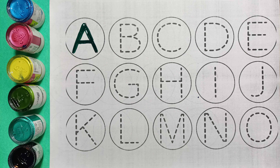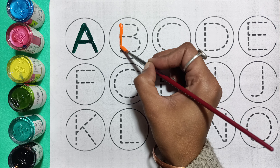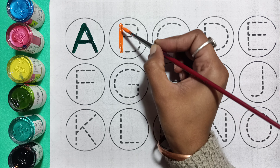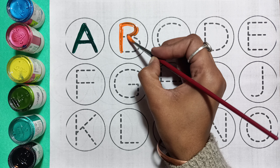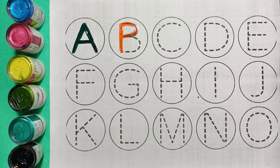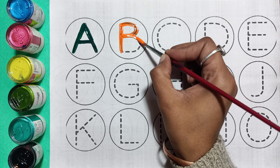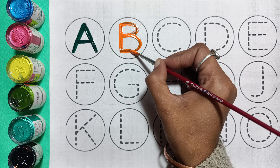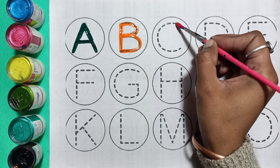B for ball. Brown color. Orange color. B for ball. Orange color. C for cat. Red color.